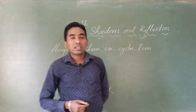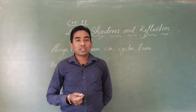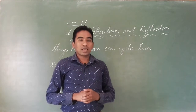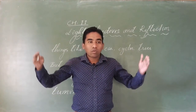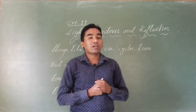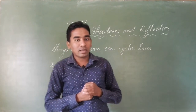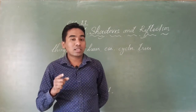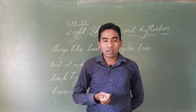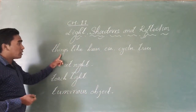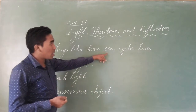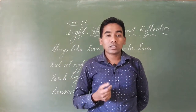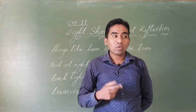Dear children, in our surroundings we can see a variety of objects like the table, chair, fan, wall, road. While you are coming to school, on the road we can see vehicles like buses, trucks, cars, cycles, bicycles. Different things like buses, cars, cycles, and trees we can see in our surroundings because during the day time we are able to see.